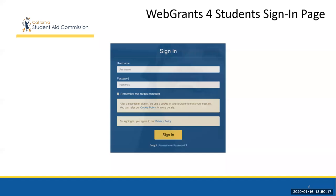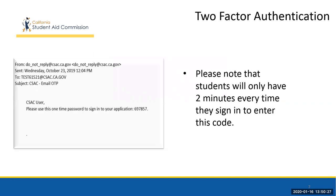Once the student has created their password, they are then asked to sign into the Web Grants for Students webpage. Students will need to wait up to five minutes before the initial login. As a security feature, Web Grants for Students has implemented two-factor authentication. After the student signs into their account, they will be prompted to enter in a two-factor authentication code. The student will then be emailed a one-time passcode to use during the sign-in process for every login. Please note, students will have only two minutes every time they sign in to enter this code. If they are unable to enter in the code within the two-minute window, they will have to start this process over.